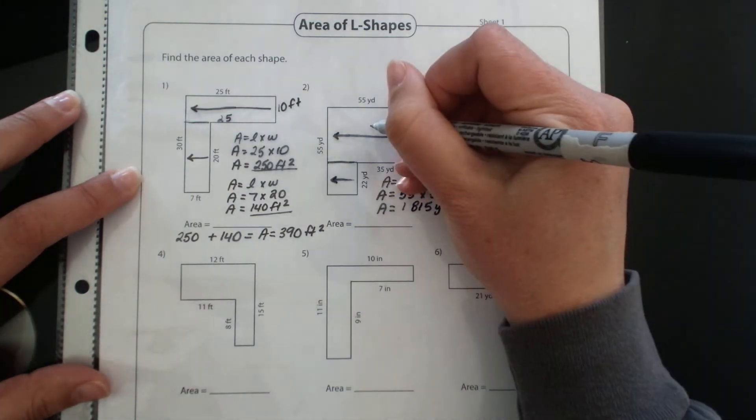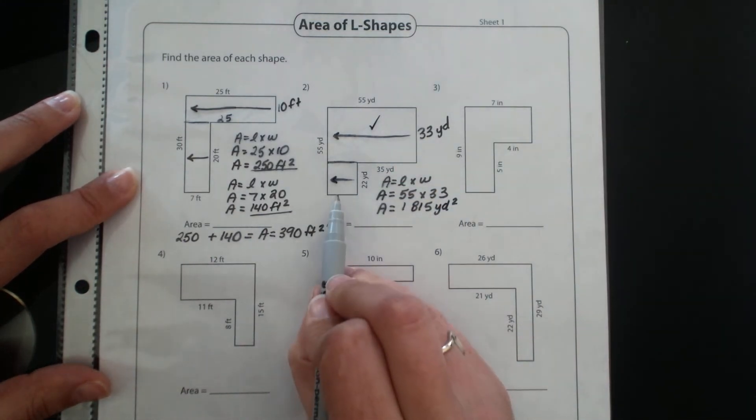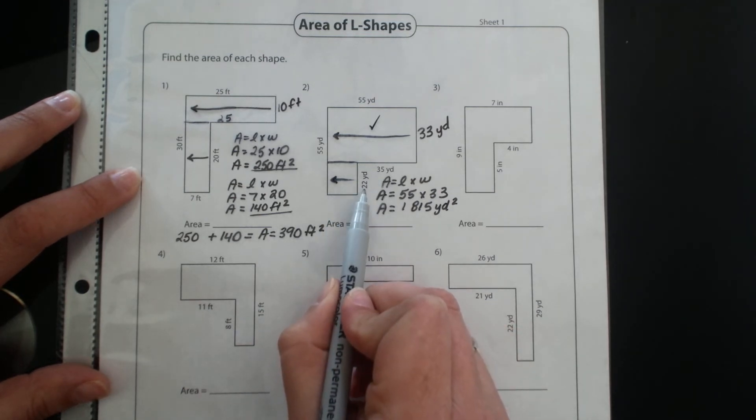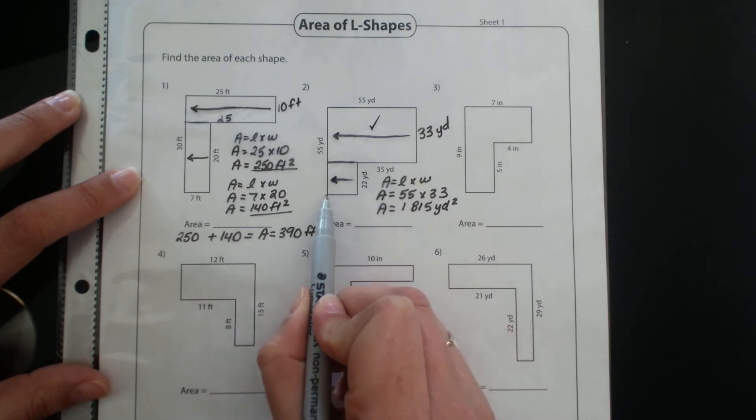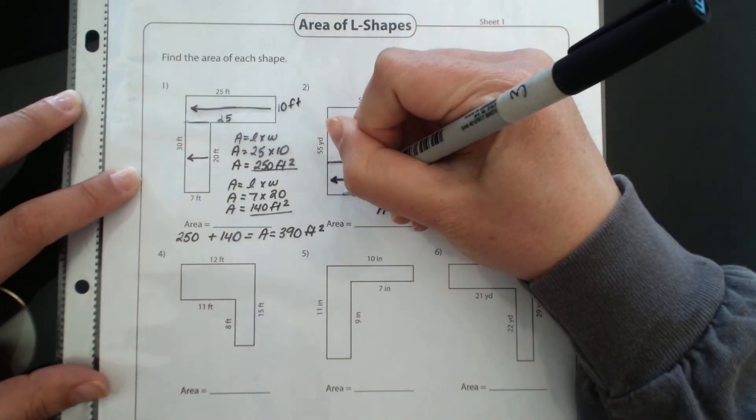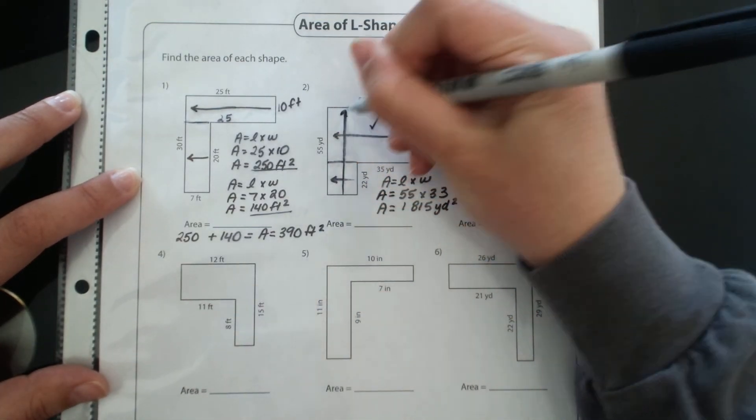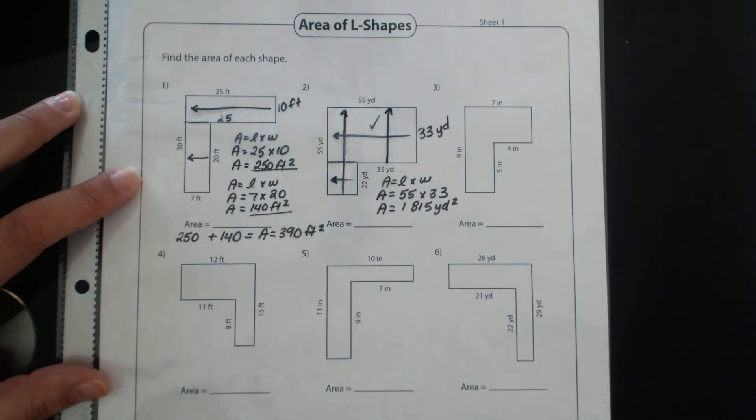So that one's now done. Now I'm looking to this bottom one. Now I have a side length of 22, but then I do not have the bottom side length. So then I've got to draw an arrow and look across to see what two sides make up that total side.